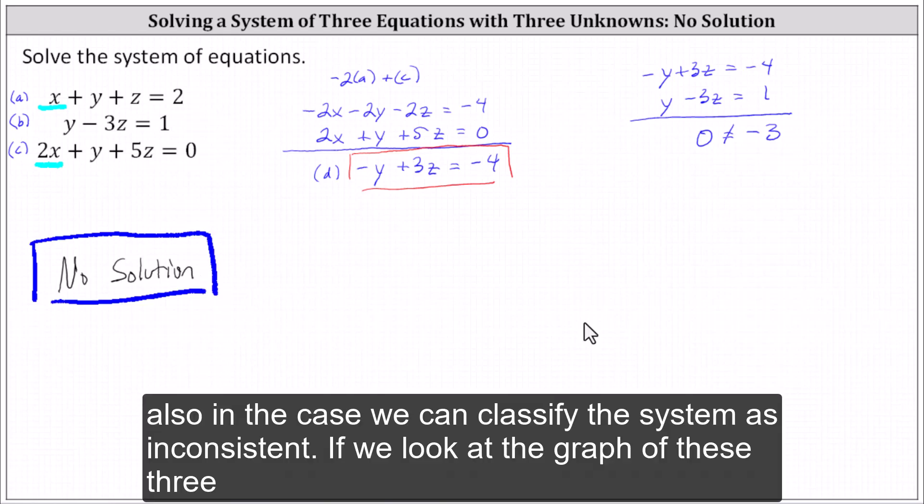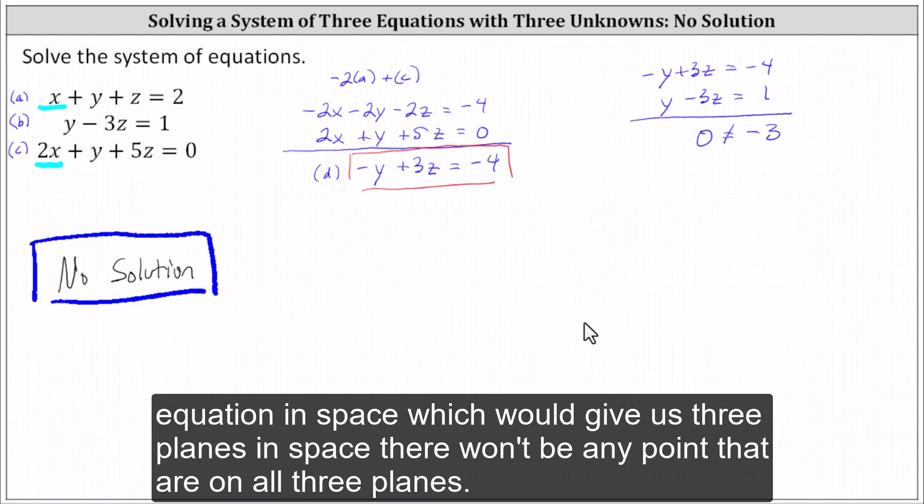Which remember also indicates we can classify the system as inconsistent. If we look at the graph of these three equations in space, which will give us three planes in space, there won't be any points that are on all three planes.